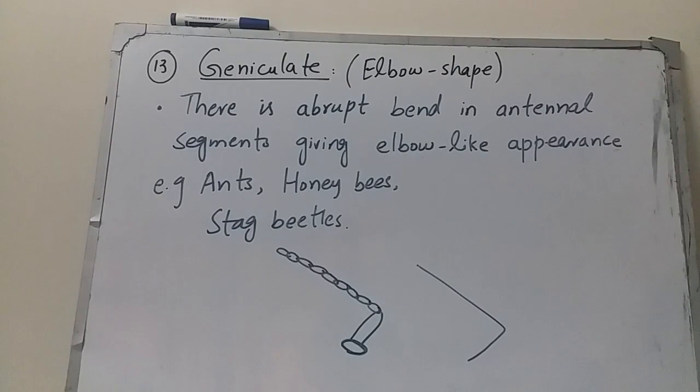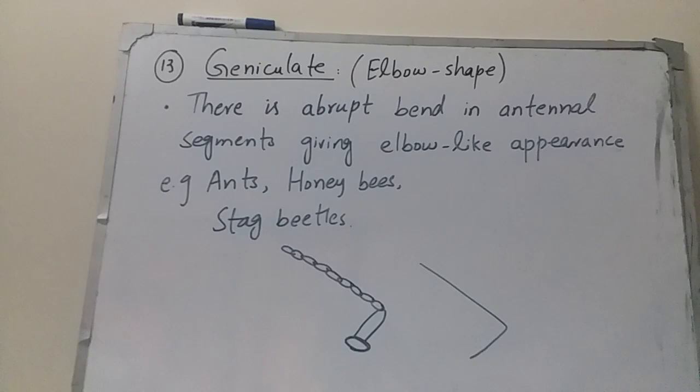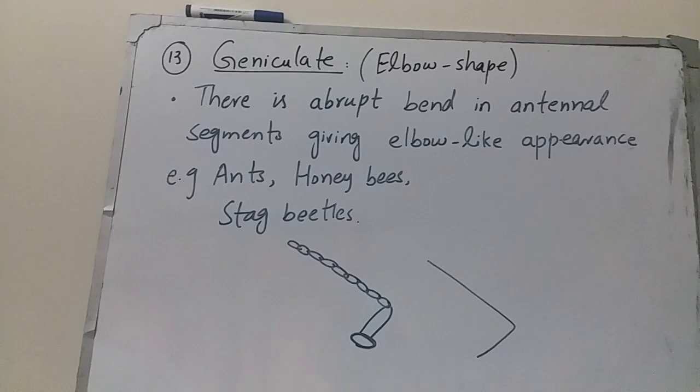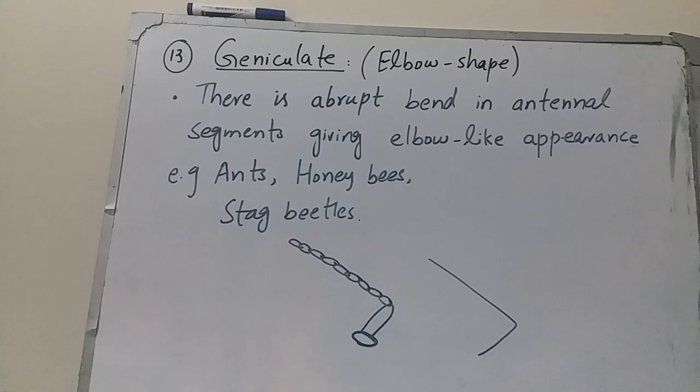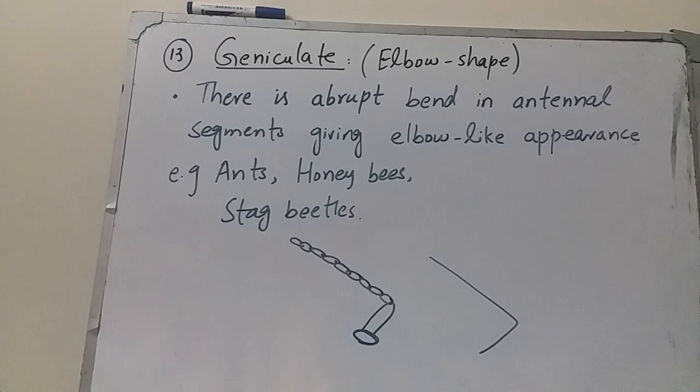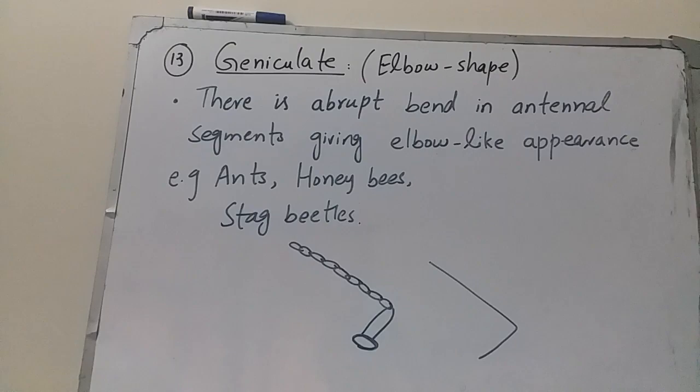The next type is geniculate antenna. Geniculate means elbow-shaped. In this case, there is an abrupt bend in the antenna segments giving an elbow-like appearance — a sharp bend after the pedicel in the flagellum gives an elbow-like appearance. Geniculate antennae are found in ants, honey bees, and stag beetles.